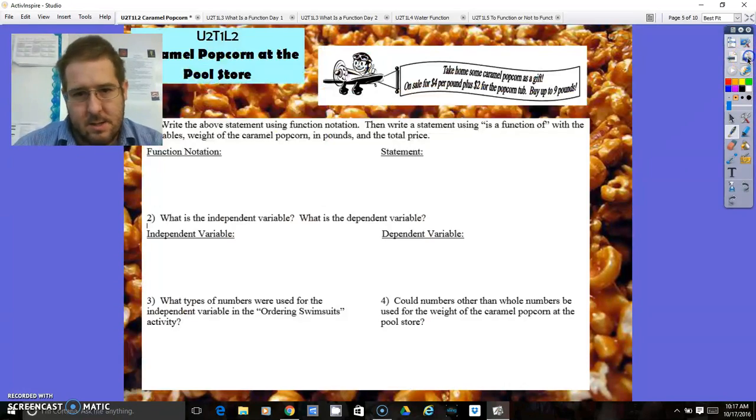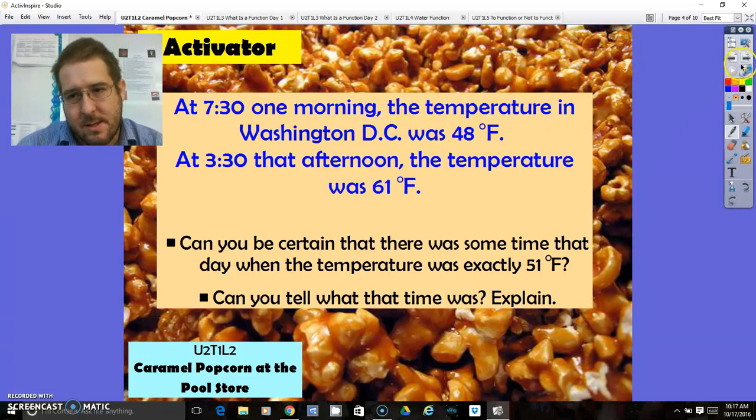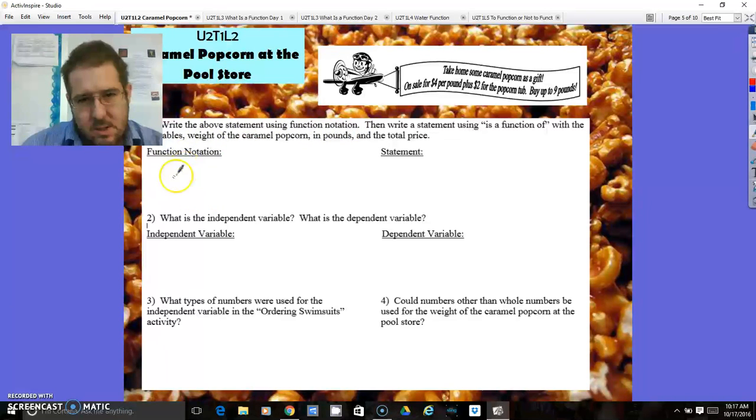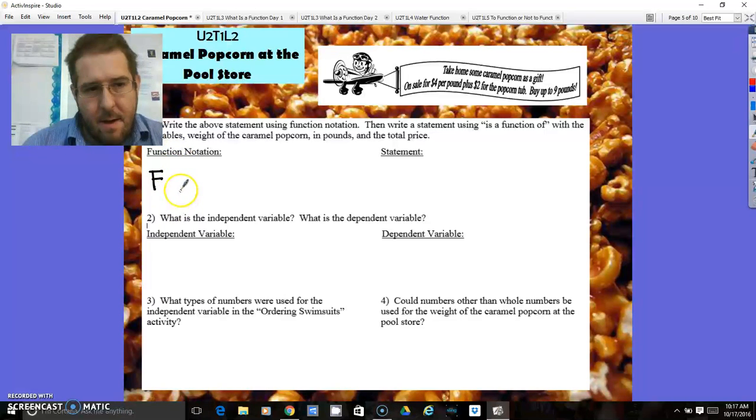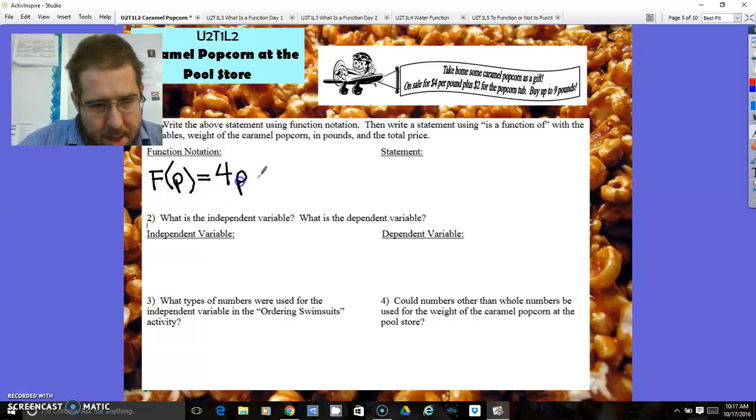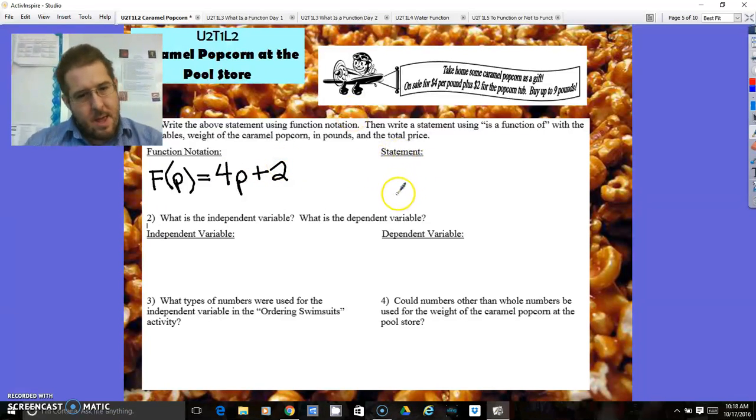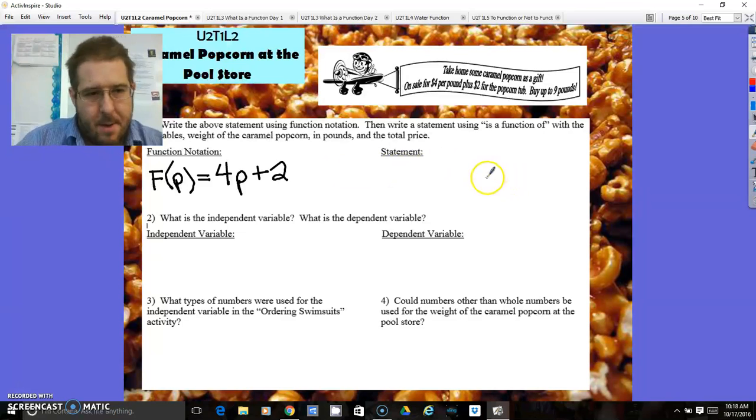Today this lesson was the activating question. Write the above statement using function notation. Function notation would be f of, that's just the name of the function. In this case, I could be p for the amount of pounds. So the function of pounds is equal to $4 per pound plus the $2 for the tub. The statement would be, the total price is a function of the amount of pounds sold, or the weight of the popcorn. It's always the dependent is a function of the independent.